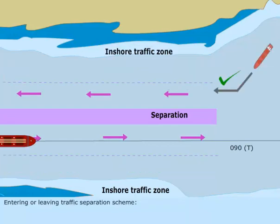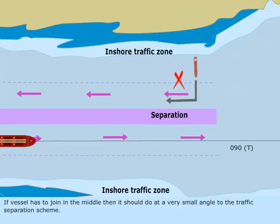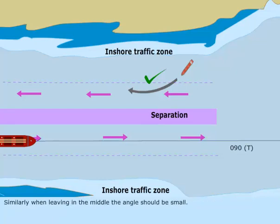Entering or leaving the traffic separation scheme: make the course line join the traffic separation scheme at the beginning or at the end. If the vessel has to join in the middle, then it should do so at a very small angle to the traffic separation scheme. Similarly, when leaving in the middle, the angle should be small.